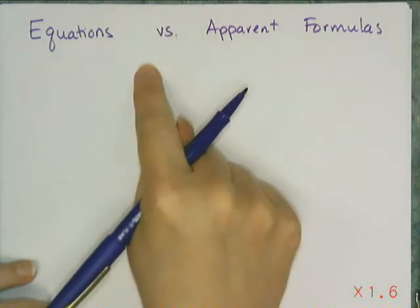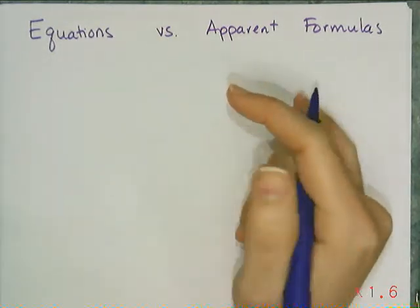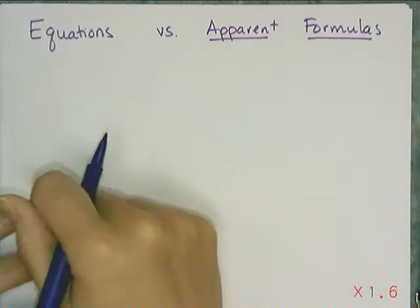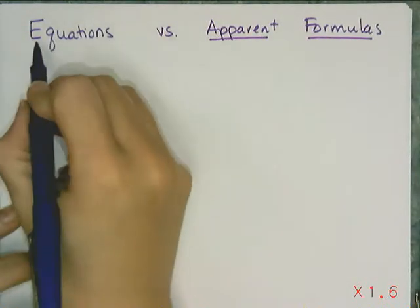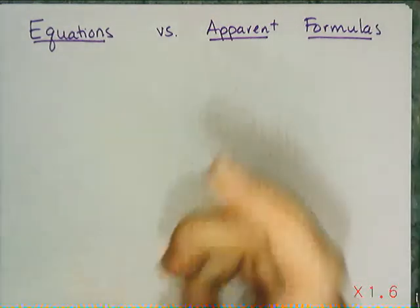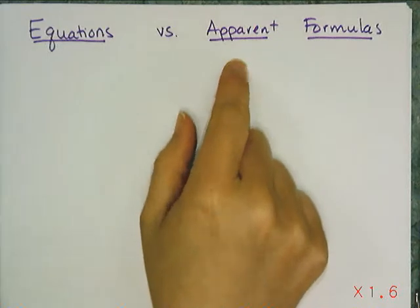Let's look at the difference between an equation and an apparent formula. It turns out the only difference is the context. We call it an apparent formula when we're specifically looking at a sequence, and it's an equation when we look at things called functions. An apparent formula is the equation for a sequence.